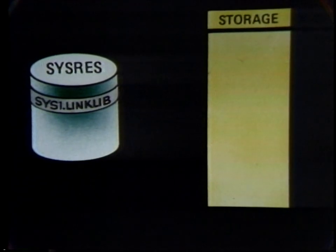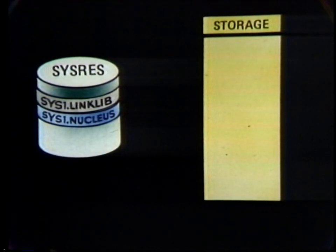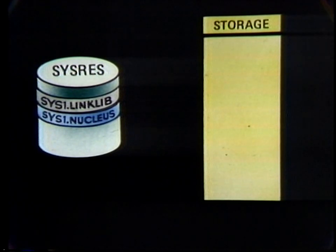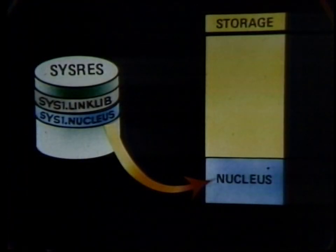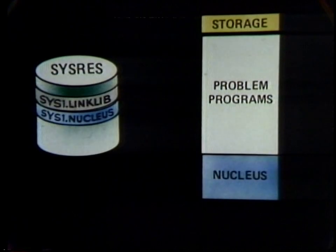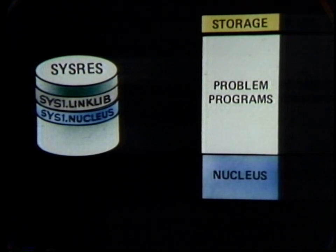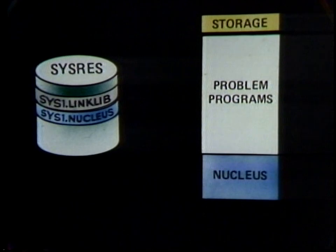The nucleus resides in a system data set called sys1.nucleus. The nucleus is loaded into storage by a process called initial program load, or IPL. In this process, the operator dials the address of the system's residence device into the dials on the console, then presses the load button. As a result, a series of instructions are executed which culminates in the loading of the nucleus into storage. Problem programs execute out of the remaining area of storage. All the processing programs execute here, as well as the non-resident parts of the operating system, which are brought into storage as required.